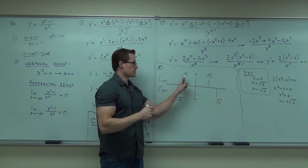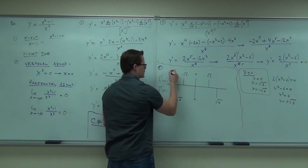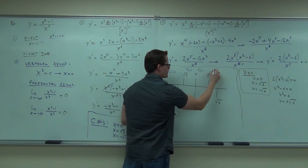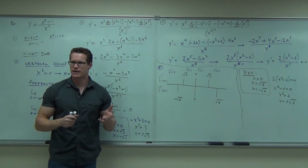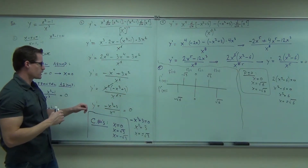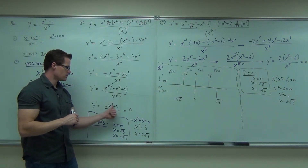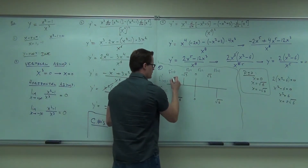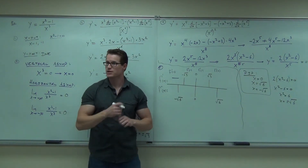For this one, I plug in negative two, negative one, one, and positive two into the first derivative. I don't really care about the actual value — I care about the sign, positive or negative. So for f prime of negative two: I get negative four plus three, that's a negative number over a positive number — negative. Negative means decreasing. Plug in negative one: I get negative one plus three, that's two over positive — positive, meaning increasing.